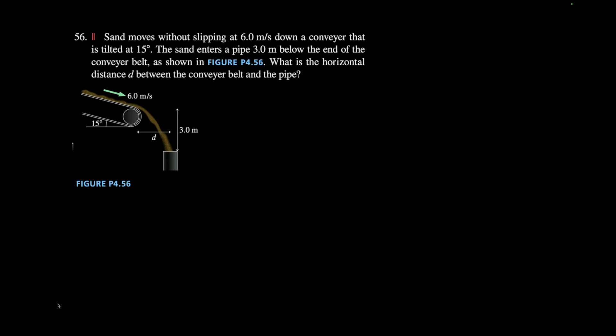And the final piece of this wonderful homework is number 56. We have sand that falls over a conveyor belt and it makes 15 degrees below horizontal angle. That is your initial velocity.